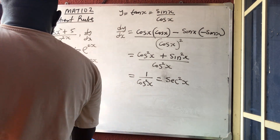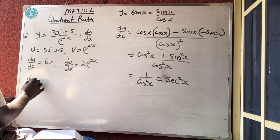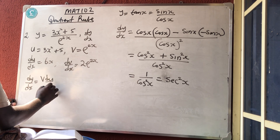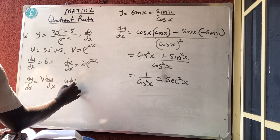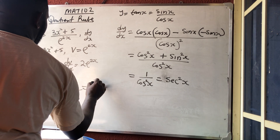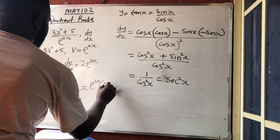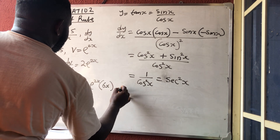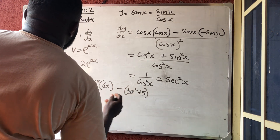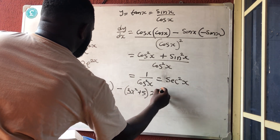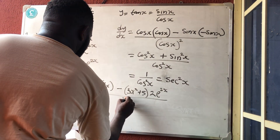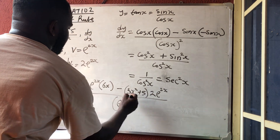Applying the formula: dy/dx equals v·(du/dx) minus u·(dv/dx), all over v squared. Substituting: v is e^(2x), du/dx is 6x, minus u which is (3x² + 5), times dv/dx which is 2e^(2x), all over v squared which is e^(2x) all squared, which is e^(4x).